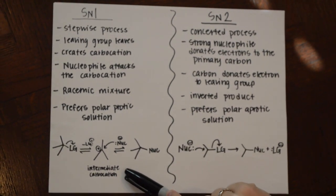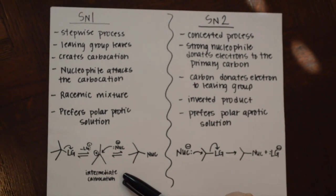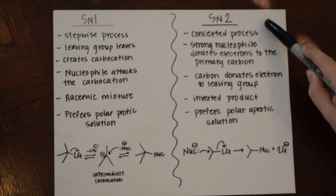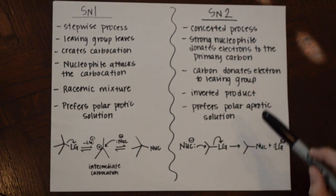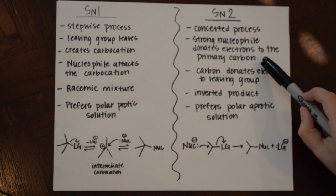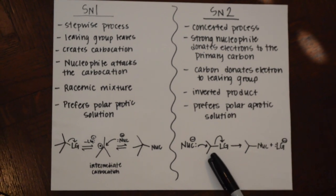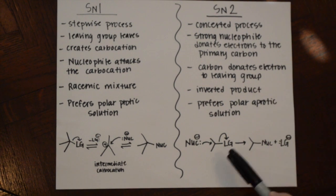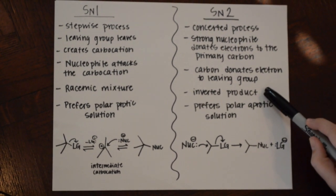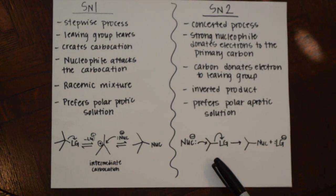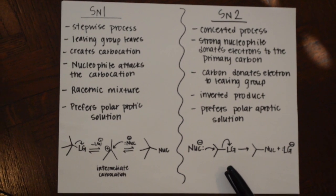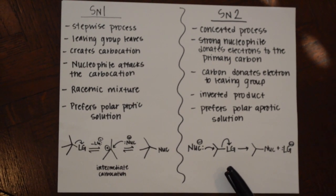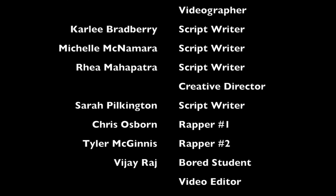This process prefers polar protic solution, which is a solution that contains hydrogen bonds. Over here, we have an SN2 process, which is a concerted process, meaning the reactions happen at the same time. The strong nucleophile donates electrons to the primary carbon, while the carbon donates electrons to the leaving group. This results in an inverted product — we don't have a racemic mixture because we do not have a carbocation. This mechanism prefers polar aprotic solution, which is a solution that does not contain hydrogen bonds.